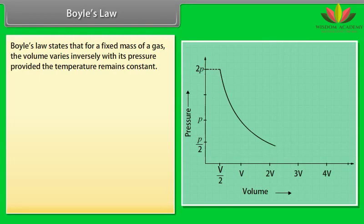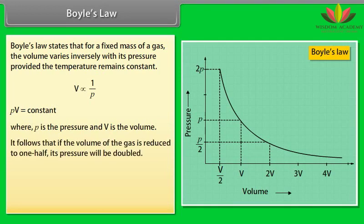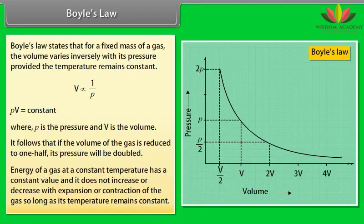Boyle's law. Boyle's law states that for a fixed mass of a gas, the volume varies inversely with its pressure provided the temperature remains constant. PV is equal to constant, where P is the pressure and V is the volume. It follows that if volume of the gas is reduced to one half, its pressure will be doubled. Energy of a gas at a constant temperature has a constant value and it does not increase or decrease with expansion or contraction of the gas so long as its temperature remains constant.